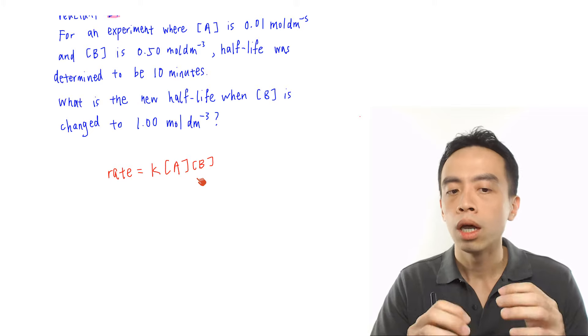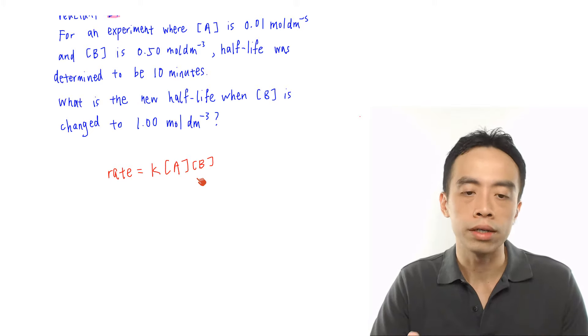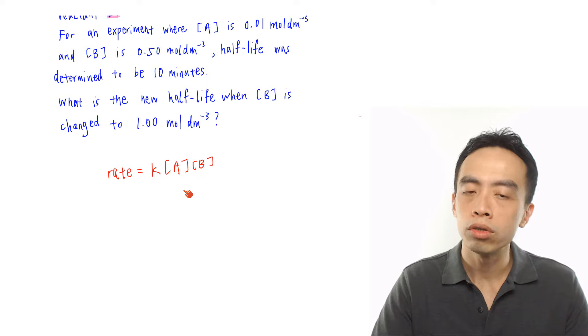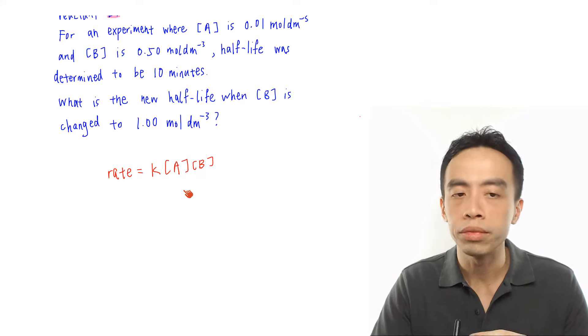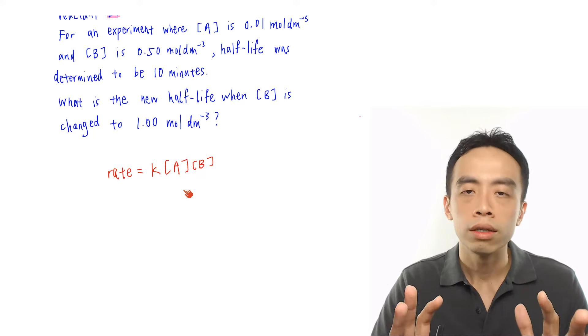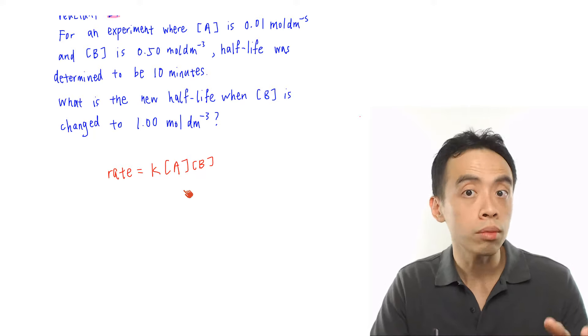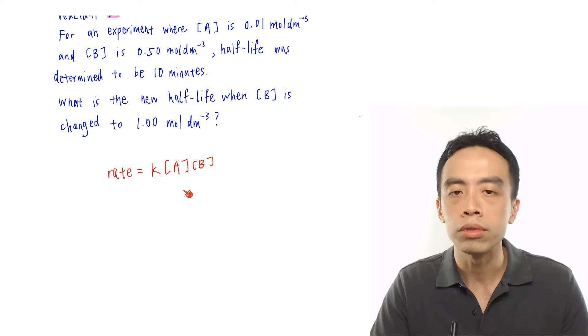What this question is suggesting is that we want to change it into an overall order 1 reaction so that half-life is a constant and we can determine the half-life. That is essentially where the concept of pseudo-first-order reaction comes in.